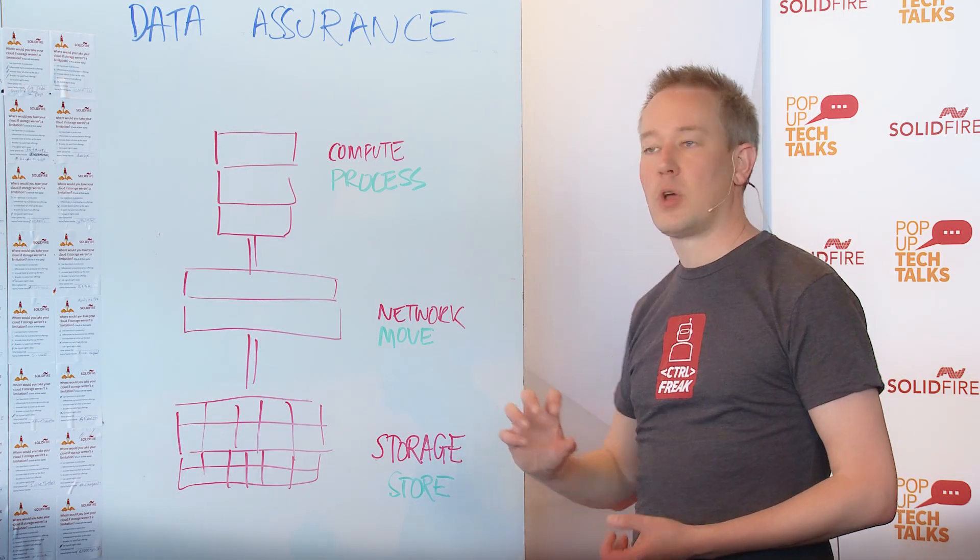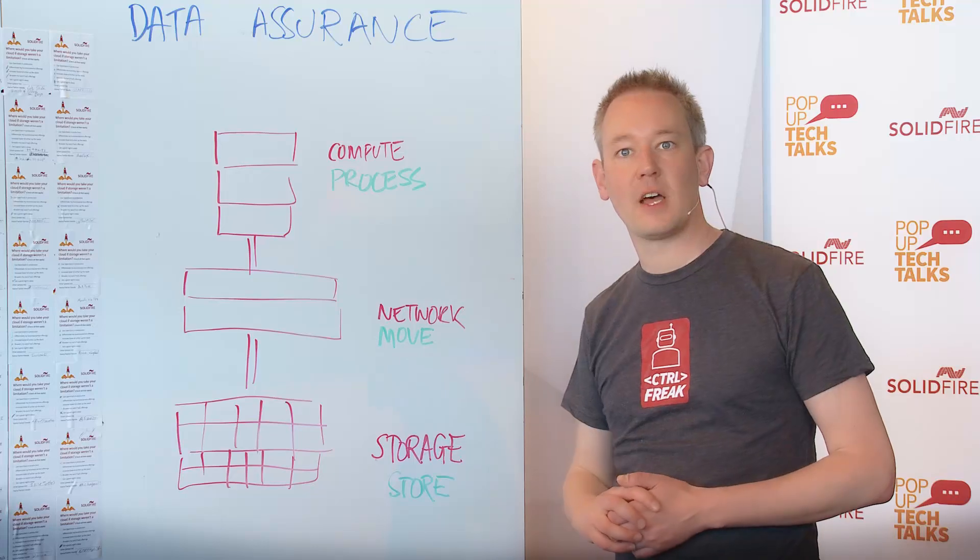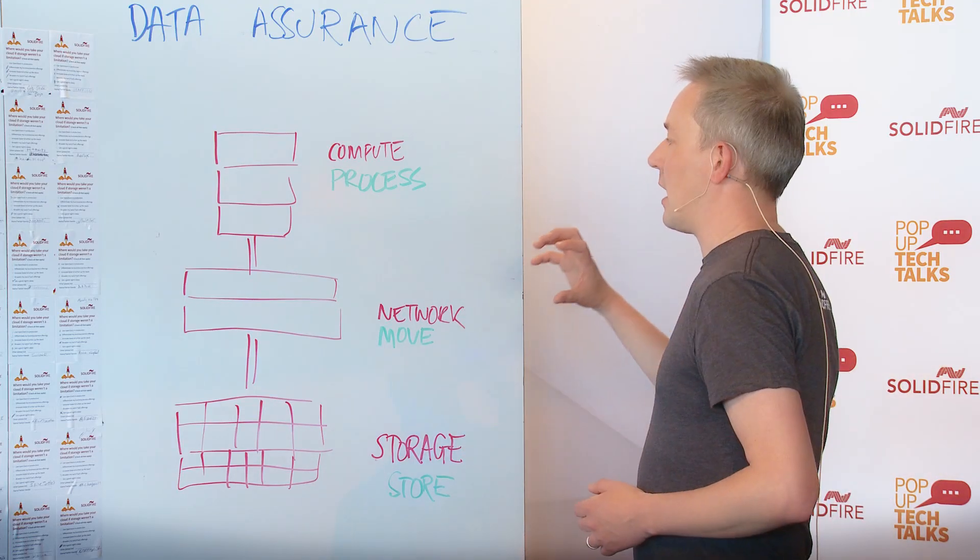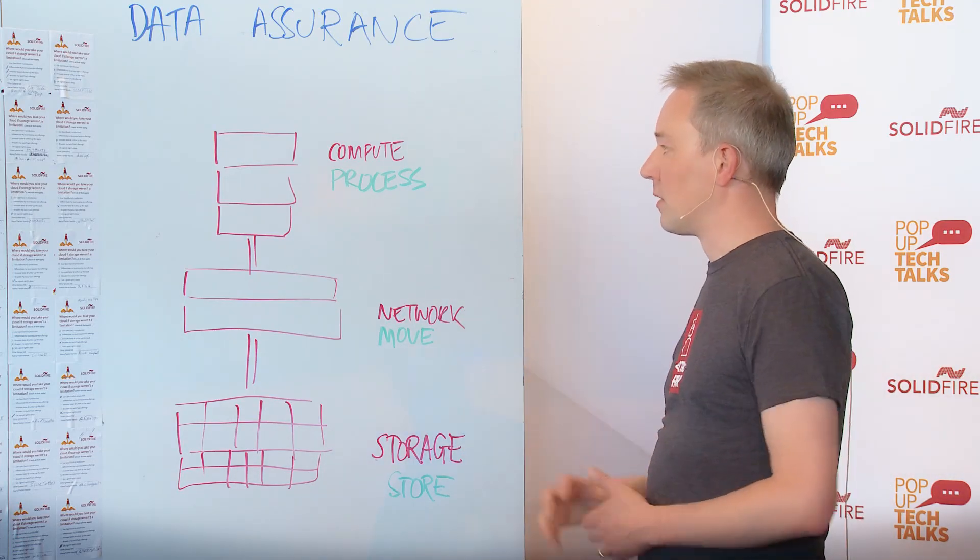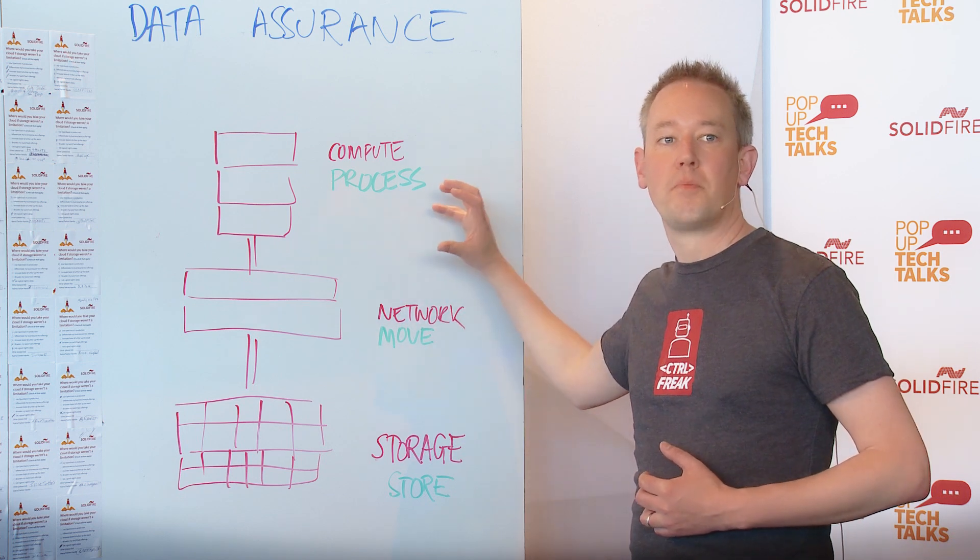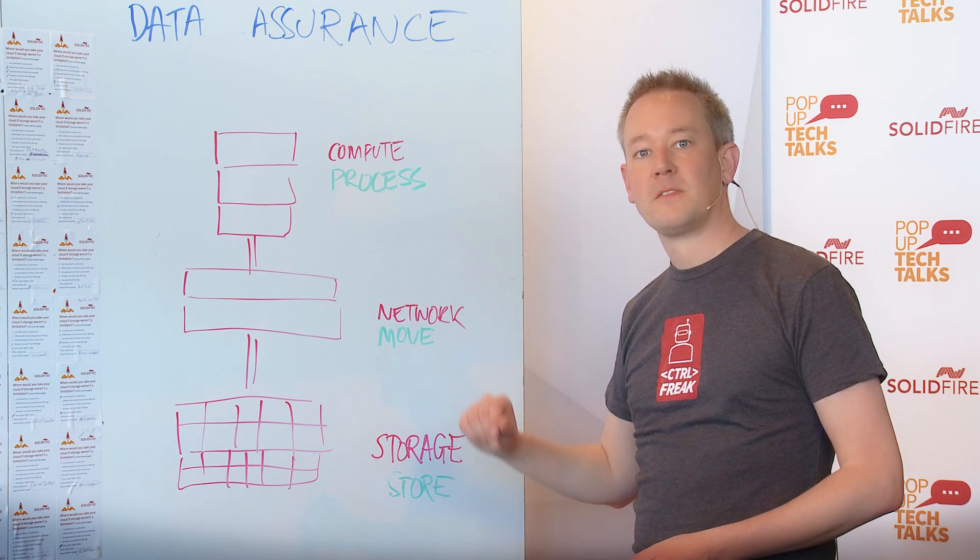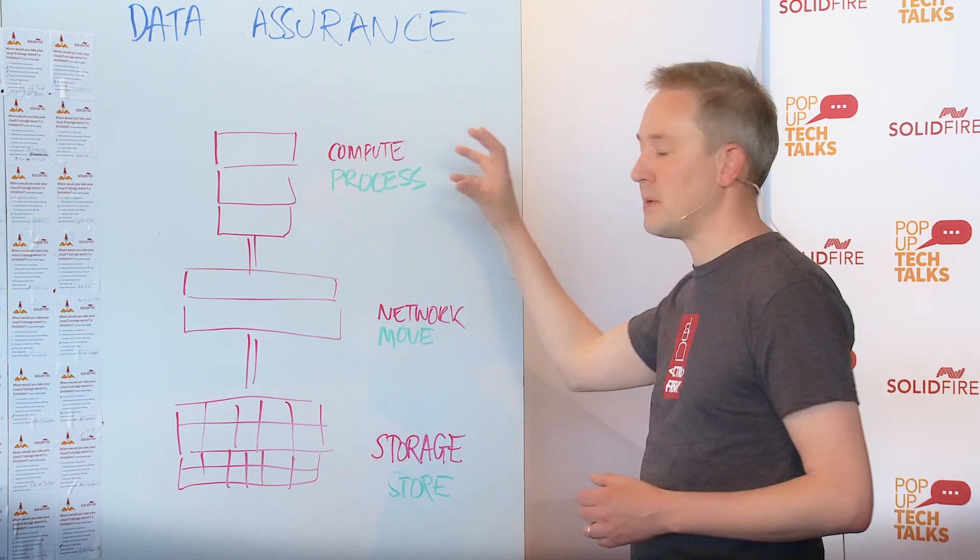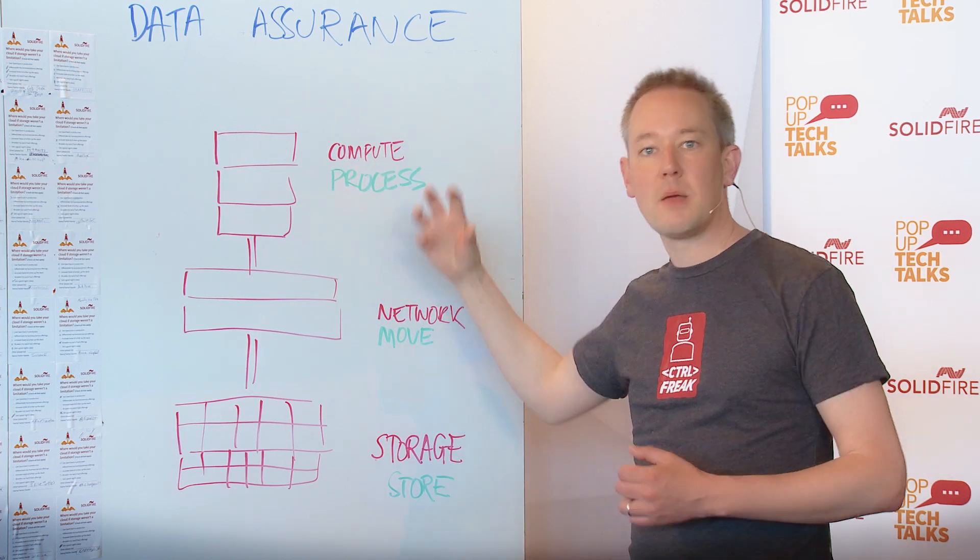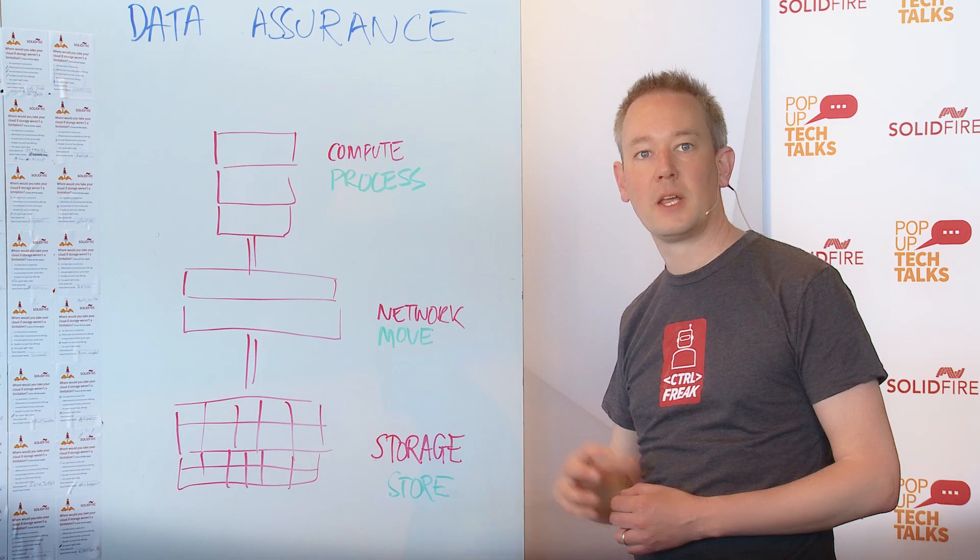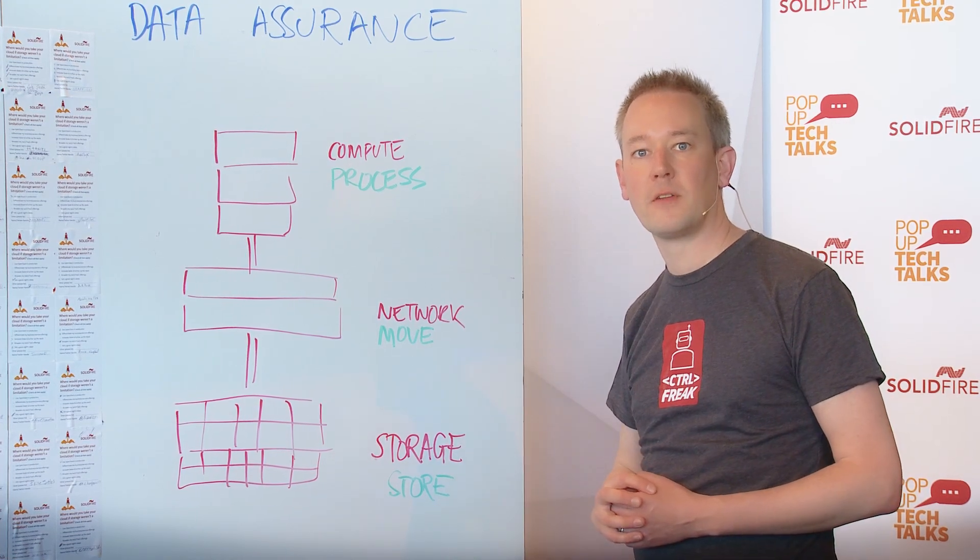It's really about how you can have 24 by 7 access to that data and how you can keep those flows going all of the time. In your complete compute layer, you think about technologies such as DRS and vMotion that can move things around seamlessly between different compute hosts to keep that processing going and keep getting those insights and value from that data.